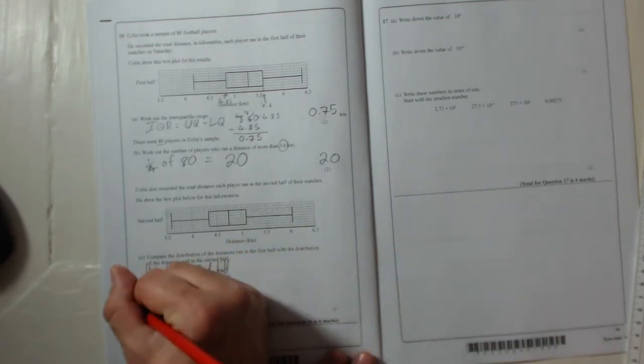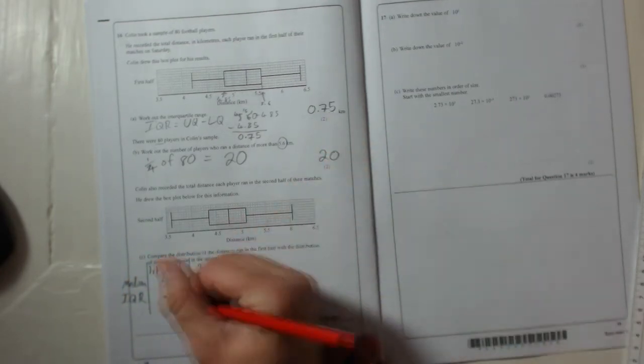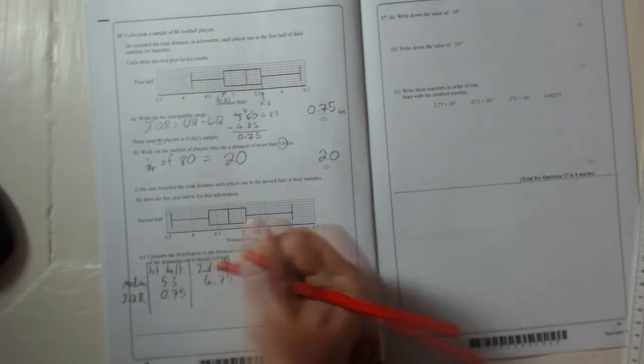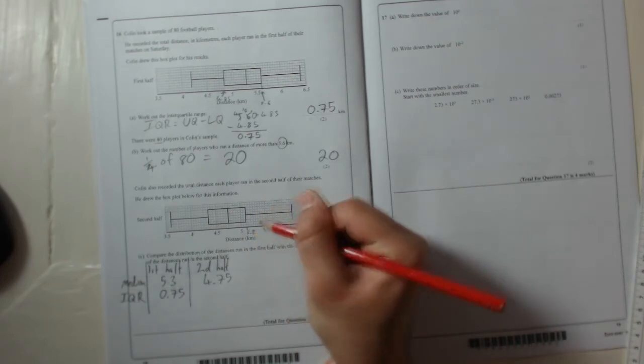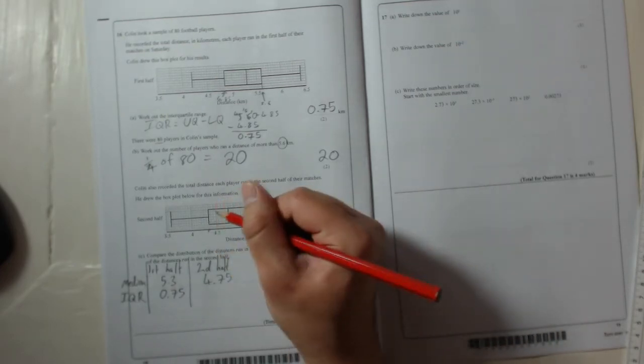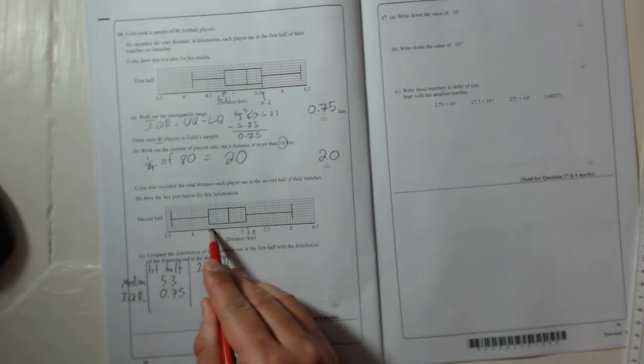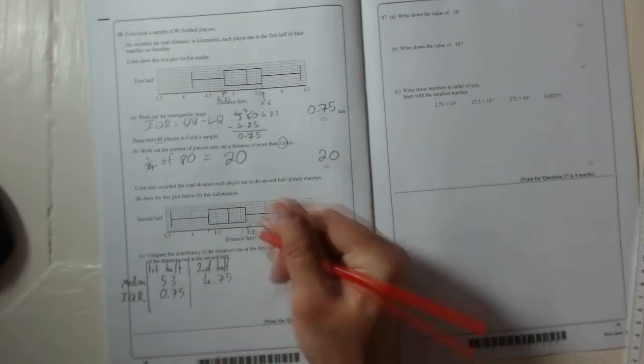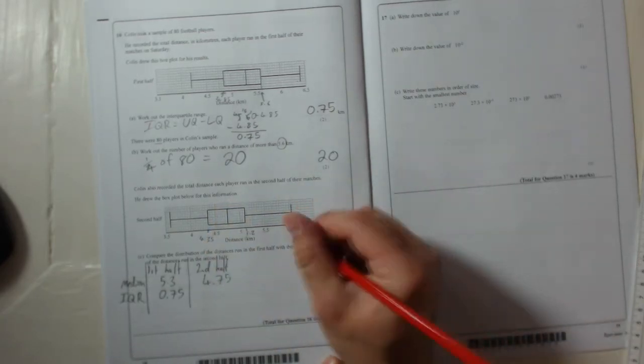Now let's comment on the interquartile ranges. Well, the first half we already worked out to be 0.75. And the second half we've got 5.2, and here it is. Now here that's 4.5, that's 4.4, so that's 4.35.